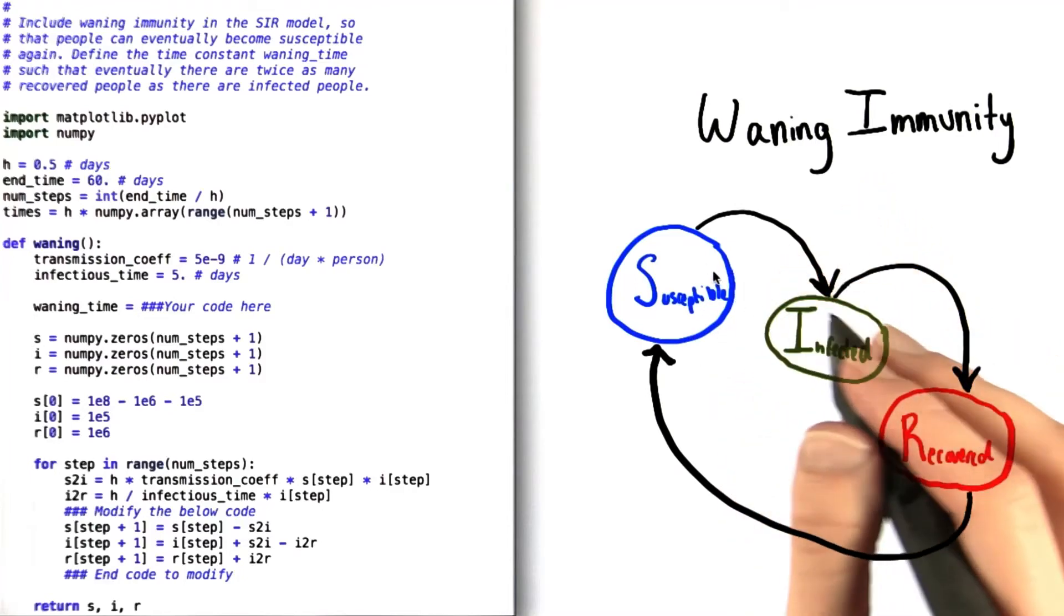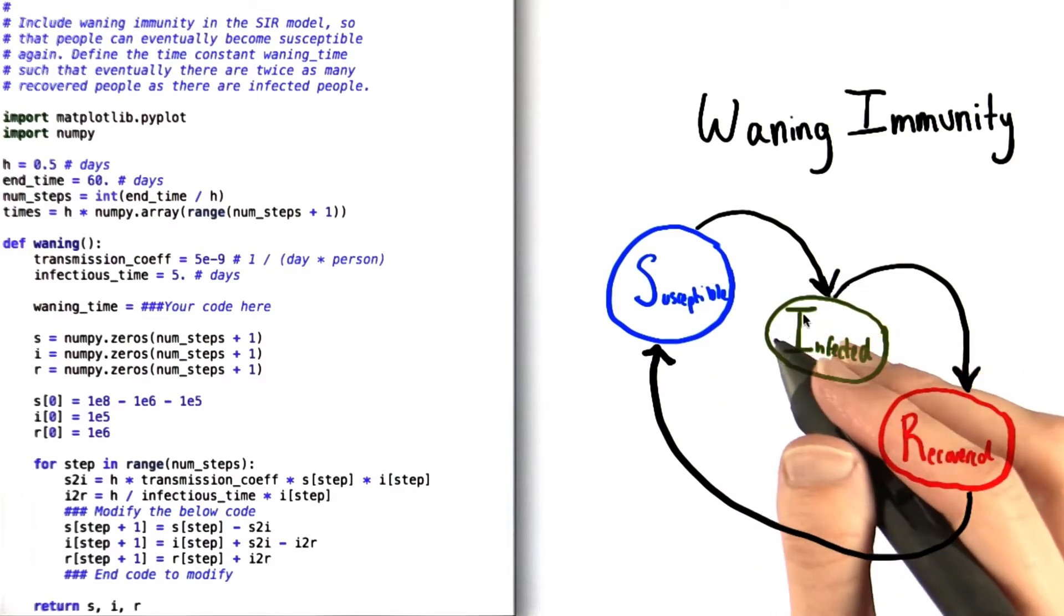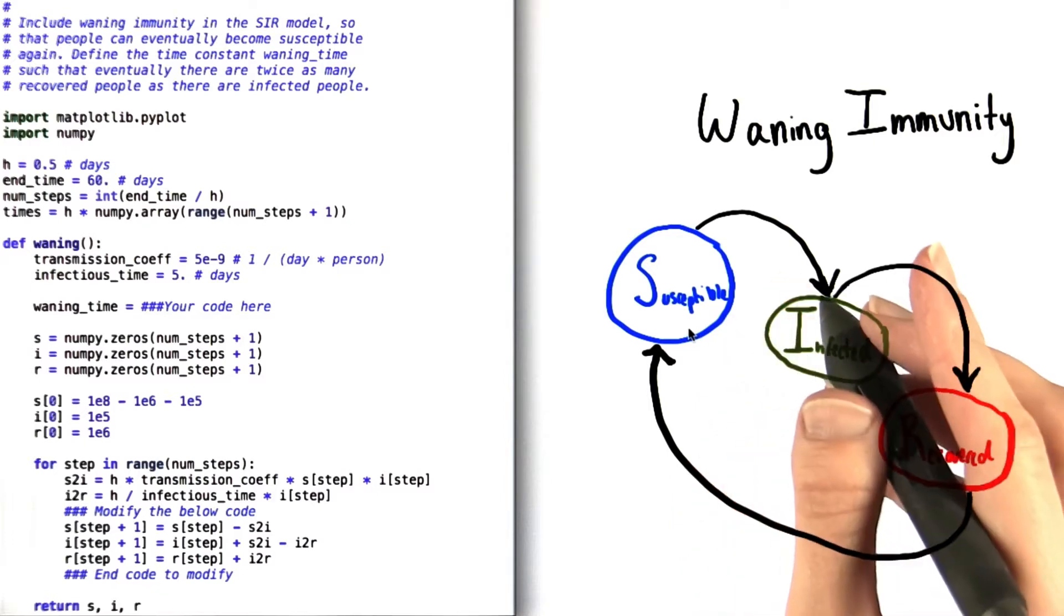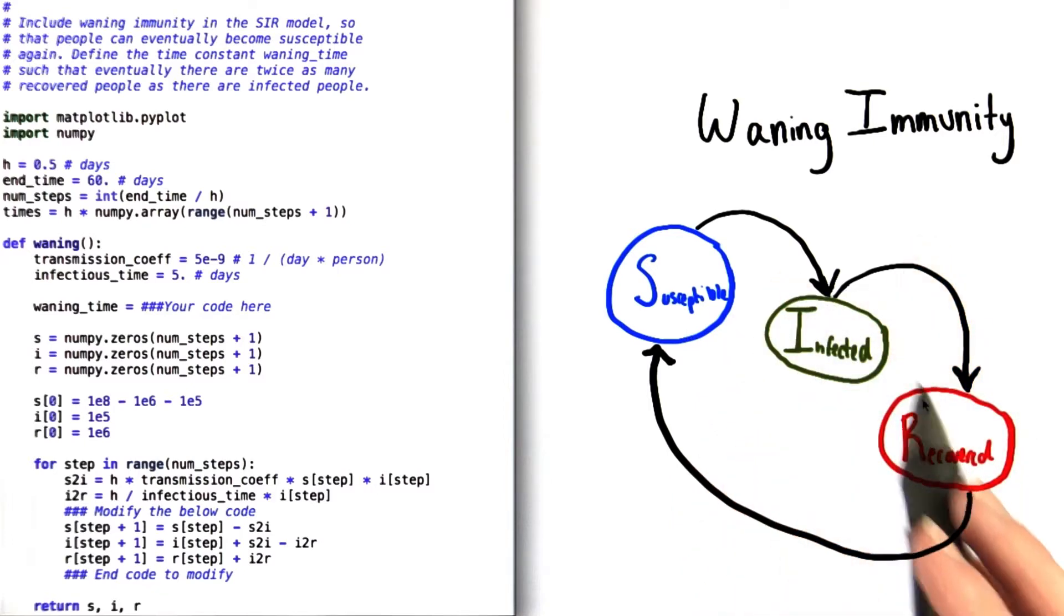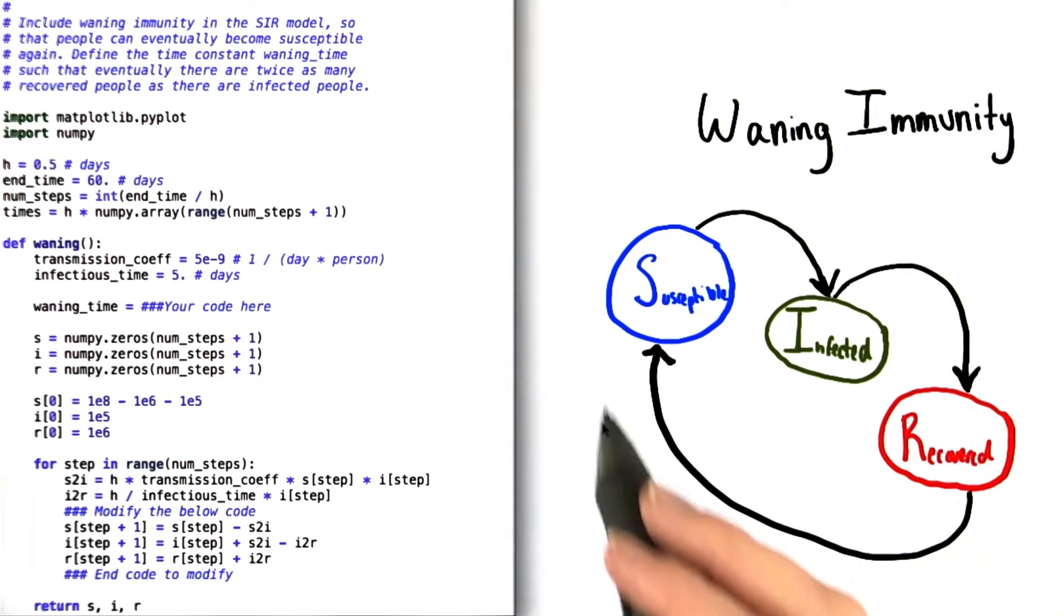In this problem, you're going to use the SIR model to look at a situation in which people's immunity doesn't last. In other words, after someone who has been infected moves to the recovered population, he or she can become susceptible again.